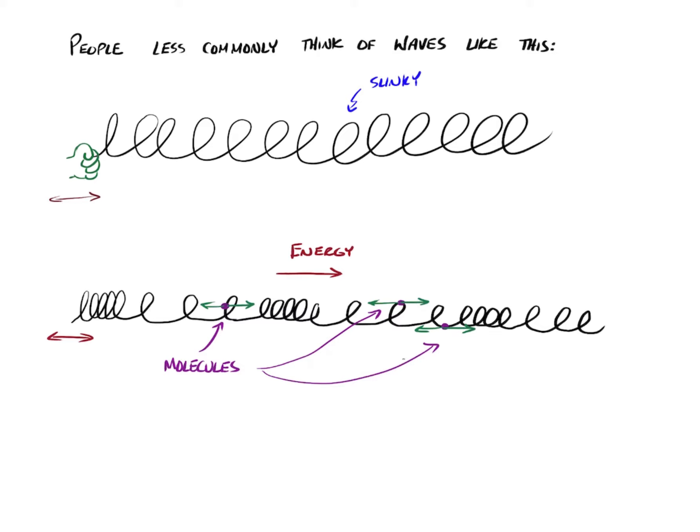But there is another form that we've all probably played around with if we've ever had a slinky, but we less commonly think of waves like this. Imagine you have a slinky. One person's holding one end, you're holding the other, and you move your hand forward and backwards instead of up and down. What you'll wind up with is you'll wind up with these sections where the slinky is compressed, and these compressed sections will be sent down the length of the slinky.